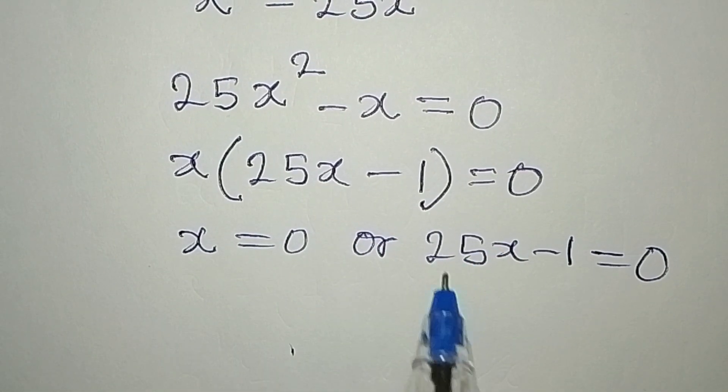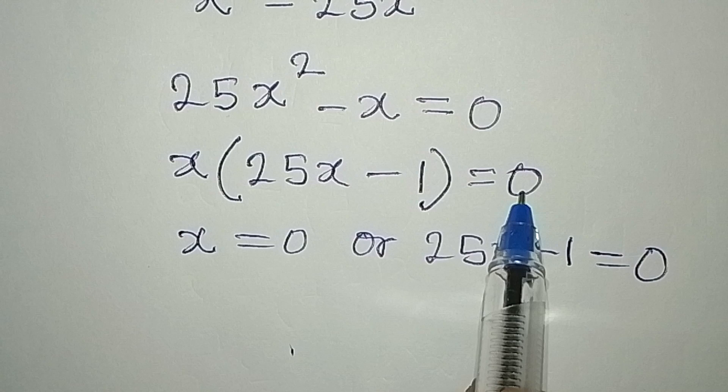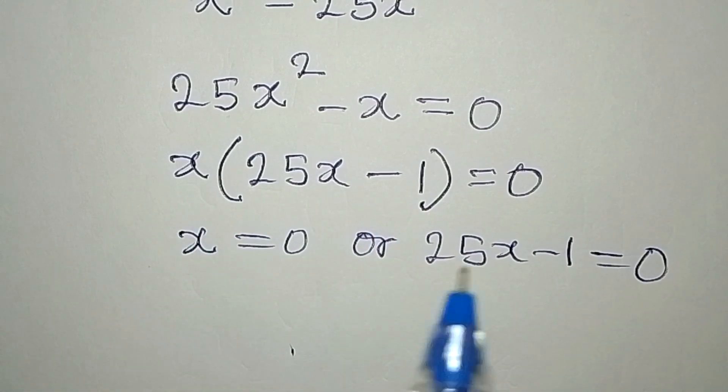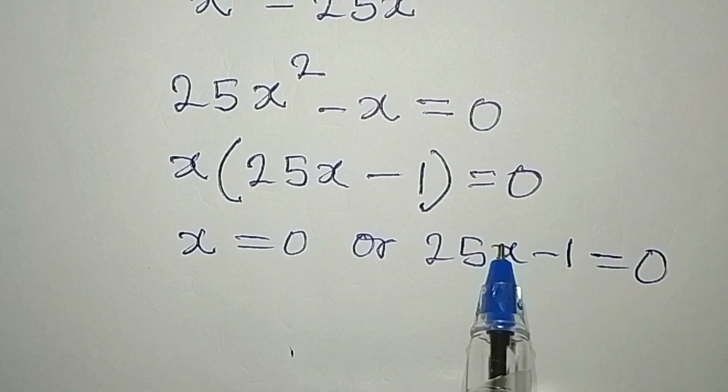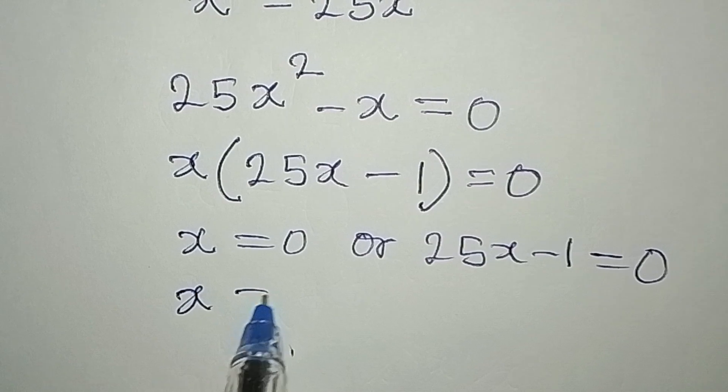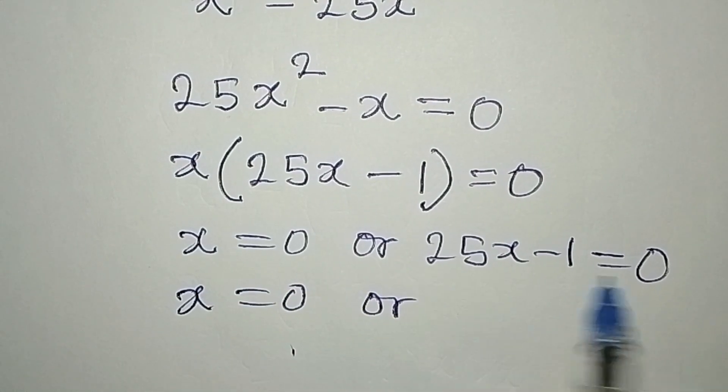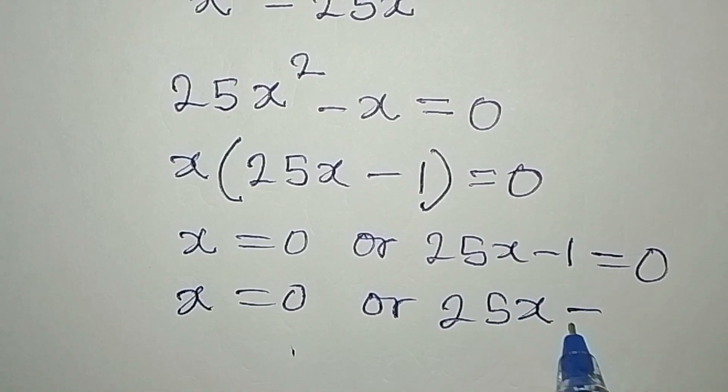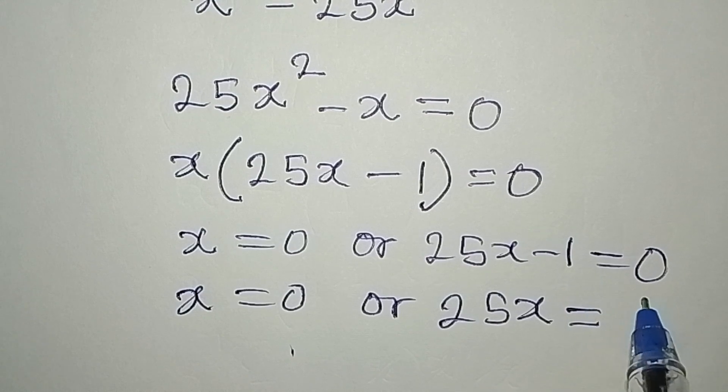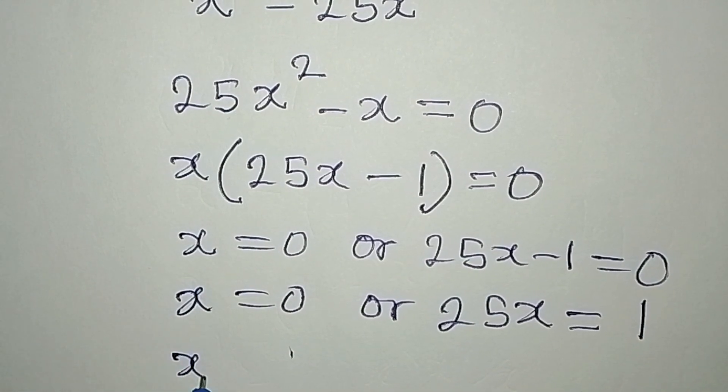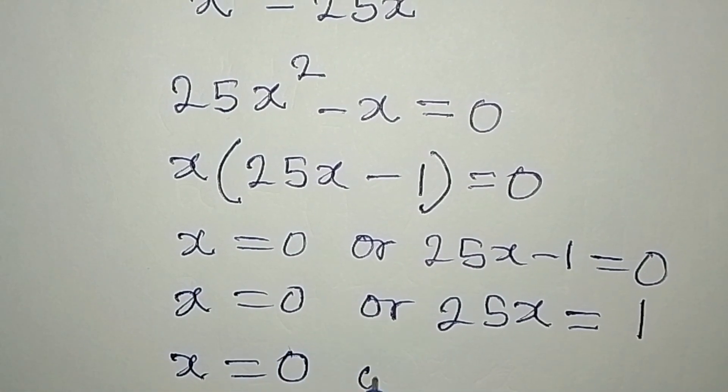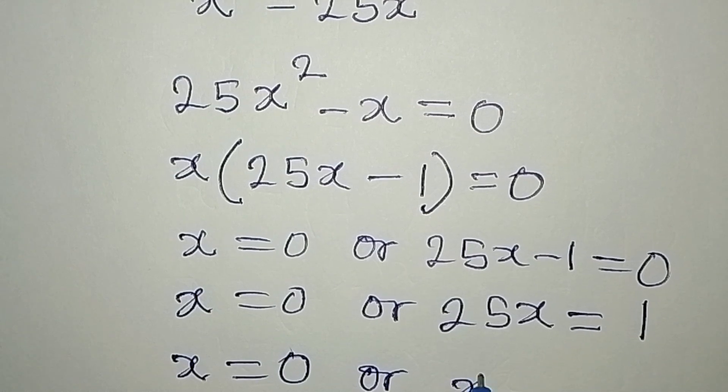Now that x is equal to zero on this other side, 25x will be equal to zero plus one, and that is one. X on this side remains zero. On this side, x will be equal to one over 25, since we need to divide both sides by the coefficient of x.